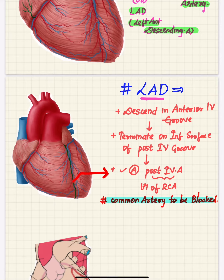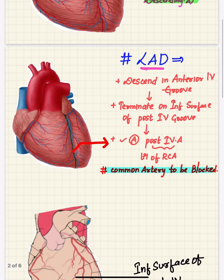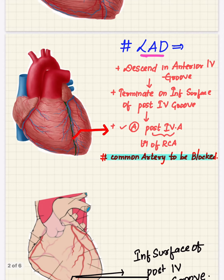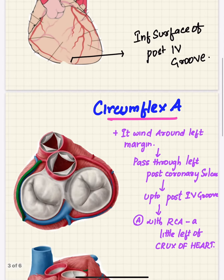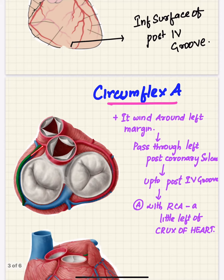The left anterior descending artery descends in the anterior interventricular groove — seen here as the green colored structure. It terminates on the inferior surface of the posterior interventricular groove, performing anastomosis with the posterior interventricular artery, a branch of the right coronary artery. It is the most common artery to get blocked.